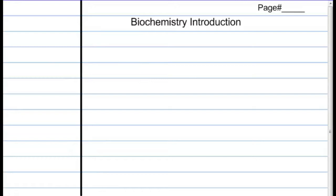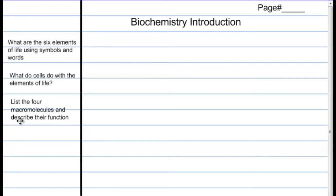You're going to put these three statements in there about spaced out like this: what are the six elements of life using symbols and words, what do cells do with the elements of life - and those can be close together - and then the last one is list the four macromolecules and describe their function.